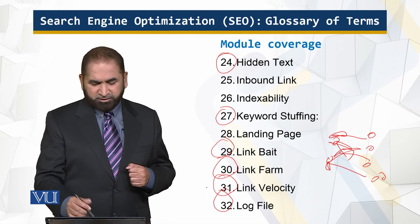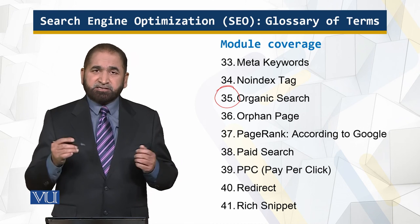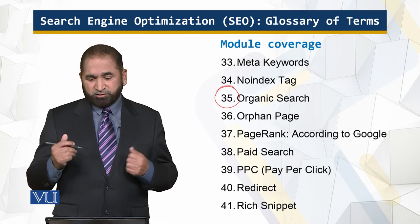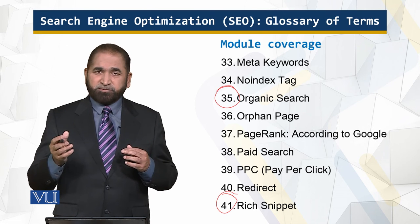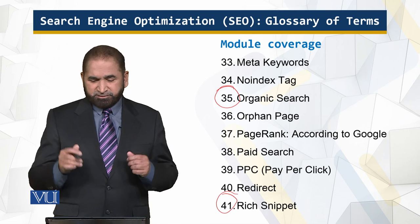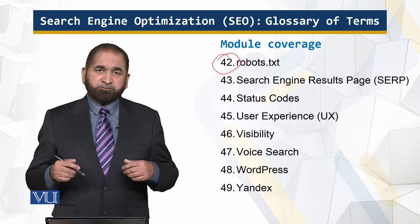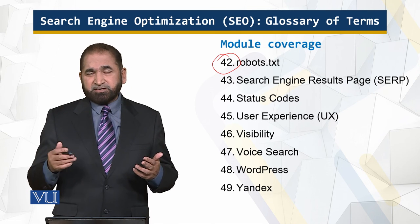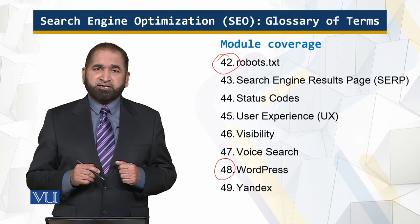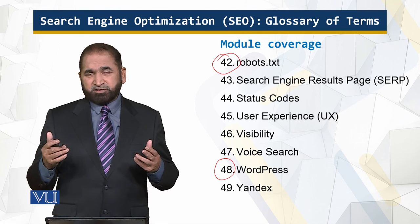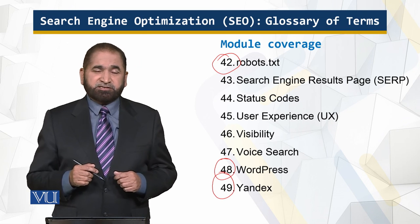A log file records all data. Organic search refers to results which appear on screen when you perform a search on a search engine. A rich snippet is brief text stored with your web page that gives a short introduction when someone finds it. robots.txt is a text file placed on your website giving directions to crawlers or robots. WordPress is a very popular content management system for creating websites. Yandex is a Russian search engine that has been around for quite a while.